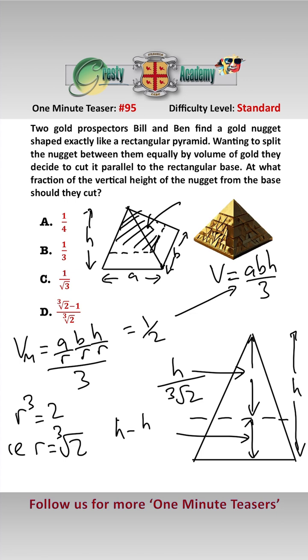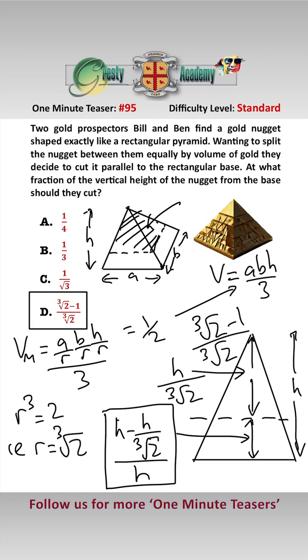bit we seek, is H minus H over cube root of 2. So the fraction that we seek is H minus H over cube root of 2 over H, which simplifies to cube root of 2 minus 1 over the cube root of 2, which is answer D.